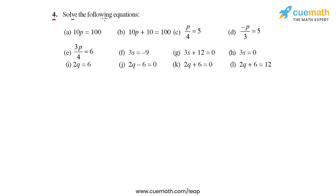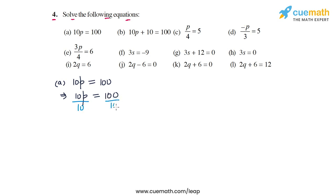In question 4 we have to solve each of the given equations. The equation in part a is 10p equal to 100. We will separate the variable p by dividing by 10 on both sides. On the LHS the 10s cancel out and 100 by 10 equals 10, giving us p equal to 10. So the solution for equation a is p equal to 10.